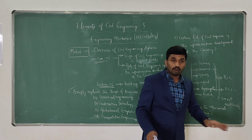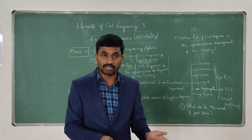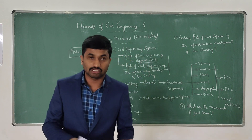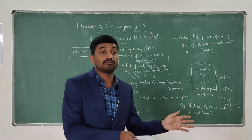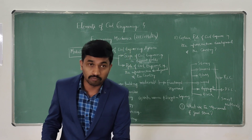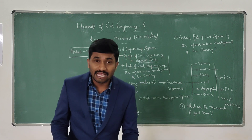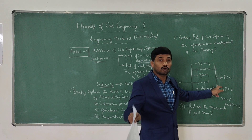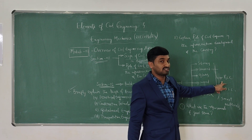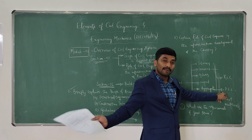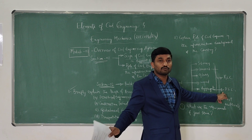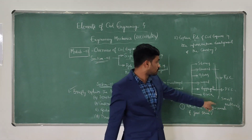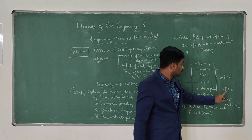In precast construction, molds are made at particular sites and carried to the required location. If you want a slab, precast slabs are available. If you need columns, precast columns are available. If you need beams, precast beams are available. At the construction site, you construct using RCC, and precast structural members like columns and beams are carried to the required location using post-tensioning or pre-tensioning systems.